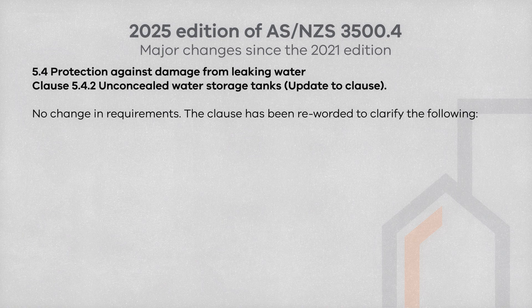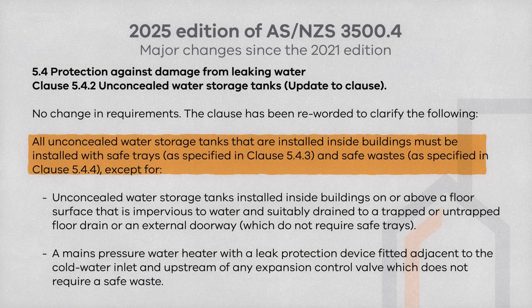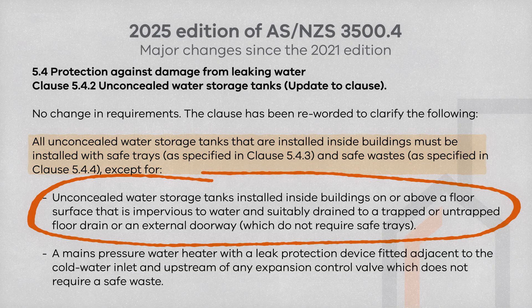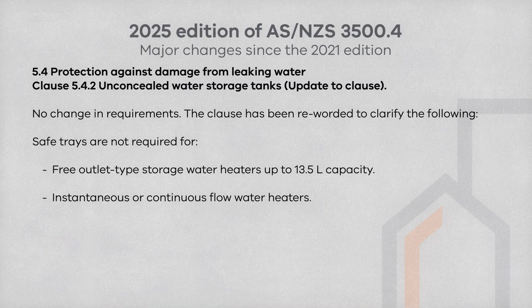Some updated changes now apply in Clause 5.4 for the protection against damage from leaking water. Clause 5.4.2 now states that all unconcealed water storage tanks must be installed with safe trays and safe wastes, unless the unconcealed water storage tank inside buildings is on or above a floor surface that is impervious to water and suitably drained, or the water heater is fitted with a leak protection device such as a mildewed valve. Safe trays are not required for storage water heaters up to 13.5 litres in capacity, or for instantaneous and continuous flow systems.